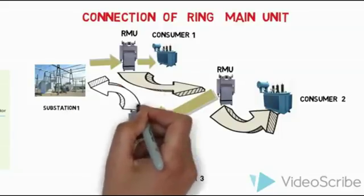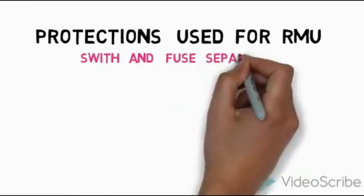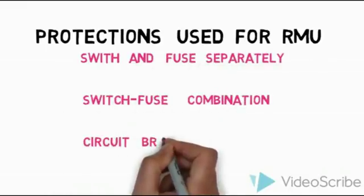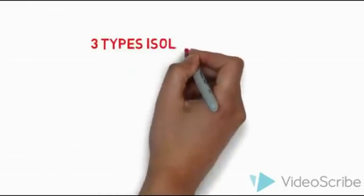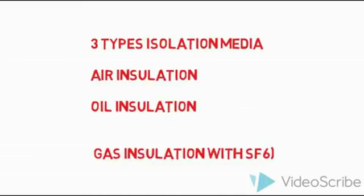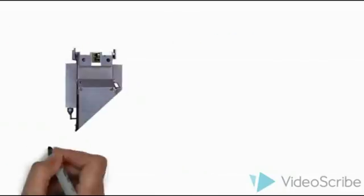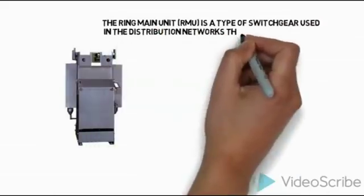This is a very easy way to rectify faults — for cable maintenance or any maintenance. The protection in a ring main unit is mainly of three types: switch and fuse separately, switch-fuse combination, and circuit breaker. For insulation, three types are used: air, oil, and gas — specifically SF6 gas. These three media are used for insulation purposes.